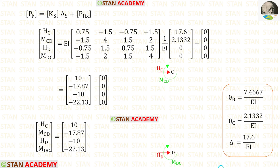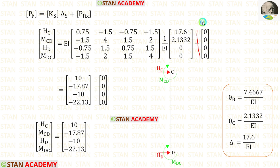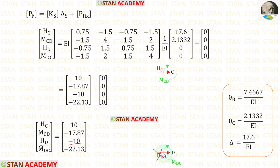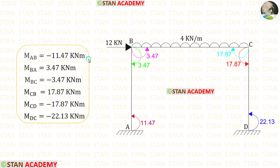Now let us find the reactions and moments in column CD. We apply the element stiffness matrix. In the displacement matrix, we apply the sway value for HC and the value of θC for MCD; for the other members we apply 0. We also apply the fixed end moments and reactions. Finally, we obtain the reactions and moments. For MCD and MDC we get negative values, meaning they act in the anti-clockwise direction. For HD we also get a negative value, meaning our assumption was incorrect — HD is actually acting towards the left side.